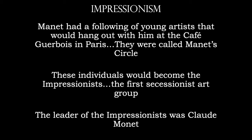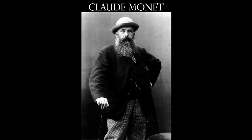Manet had a following of young artists who would hang out with him at the Café Guerbois on the right bank of the Seine in Paris. They were called Manet's Circle, and these individuals would become the Impressionists — the very first secessionist art movement. The leader of the Impressionists was Claude Monet. This is probably one of the few photographs you'll see of him without a cigarette; if the image were in color, you could see nicotine stains on his beard.